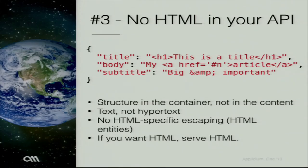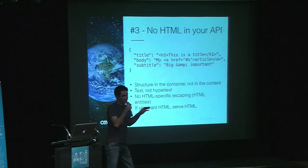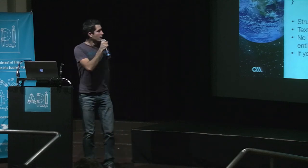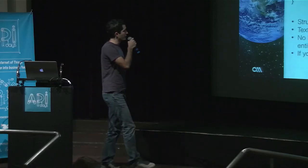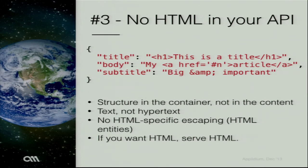Step three might seem obvious, but it's a bit tricky, and we've seen tons of examples of this — so really pay attention. Step three is: no HTML in your API. Assuming we're talking about a JSON API — though this also applies to XML or whatever — the aim of an API is to provide content, not to display content. Here's a sample API for an article or blog post. All three lines have what I would call errors.